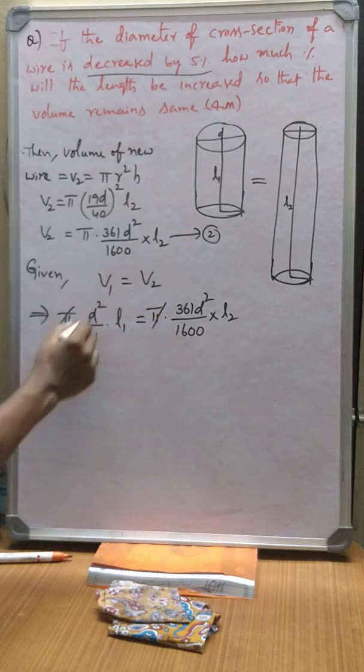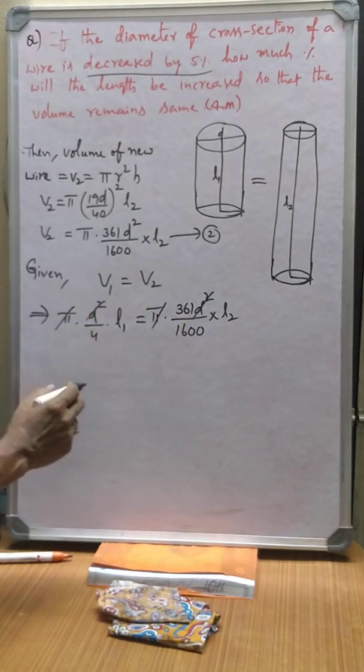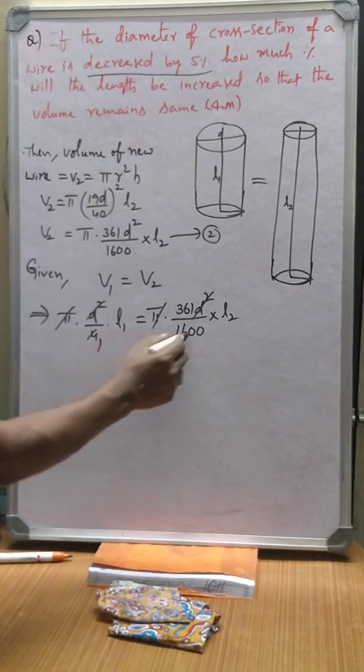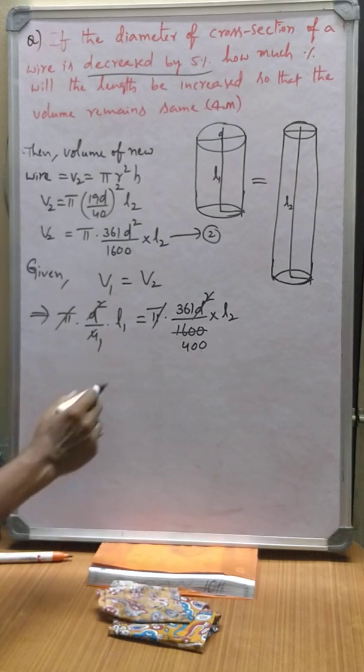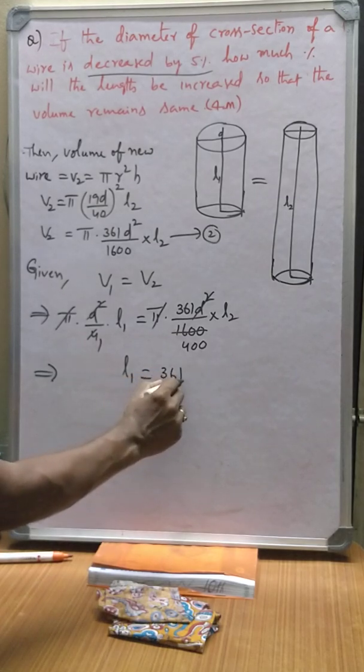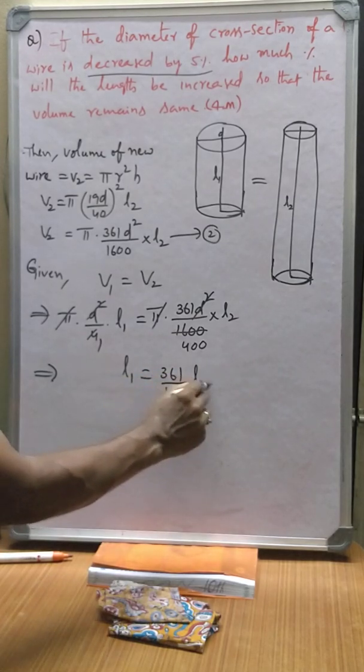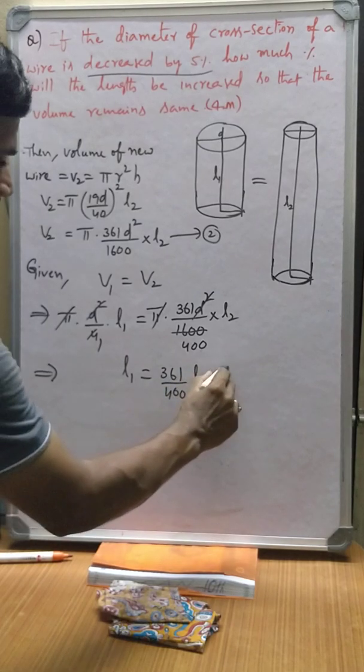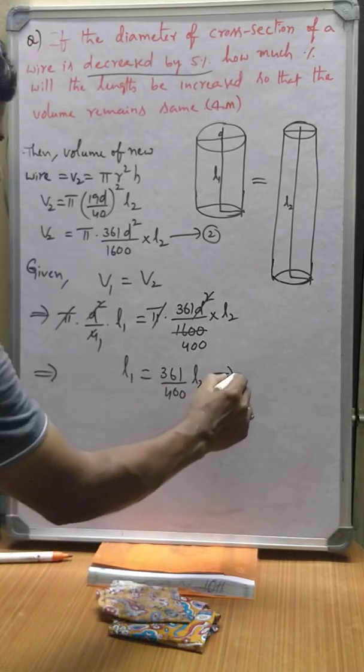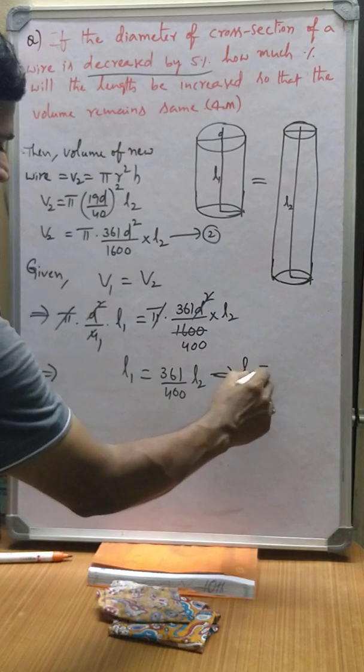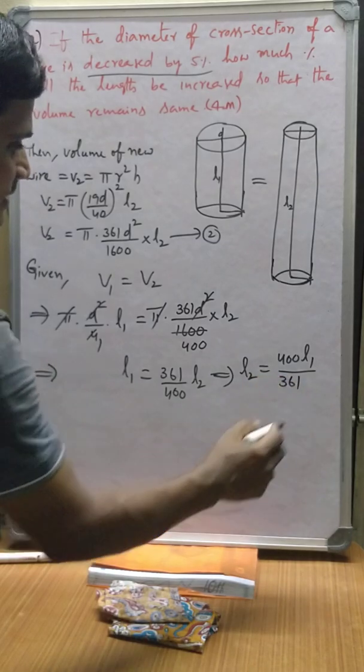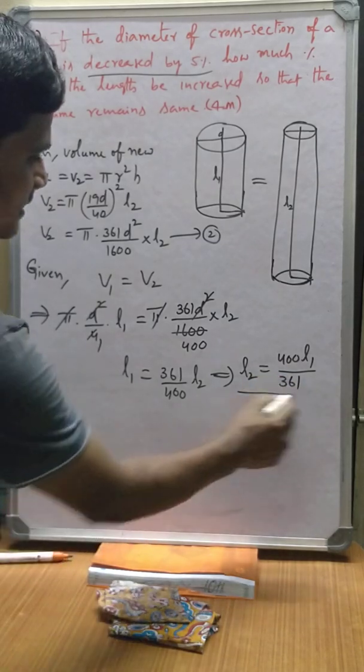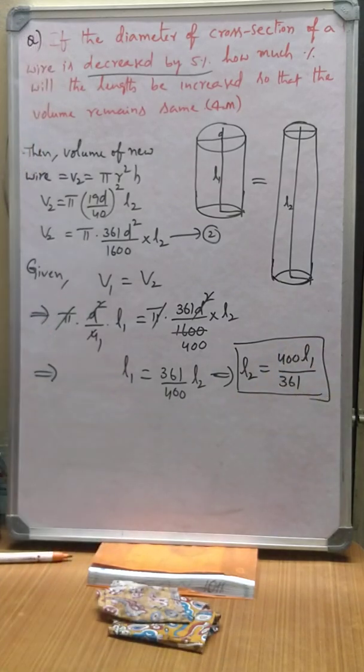π π gets cancelled, D² D² cancelled. Now L1 is equal to 361 by 400 L2. This implies, transfer this into LHS, L2 is equal to 400 L1 by 361. This is the new length of the wire.